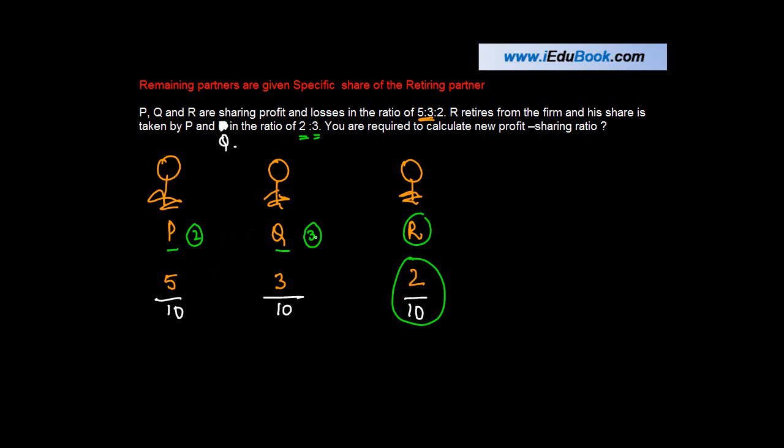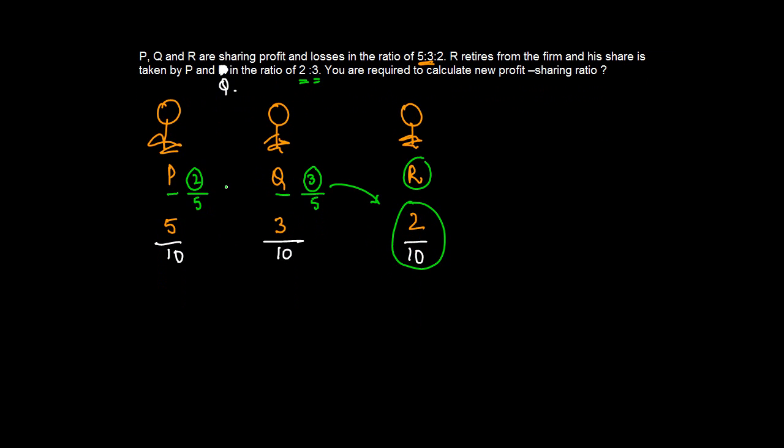If the ratio in state between them is 2:3, can we say that P got 2/5 (which is 2 plus 3 = 5) and Q got 3/5 of the share of R? Or in other words, P is originally owning 5/10 and Q is owning 3/10.